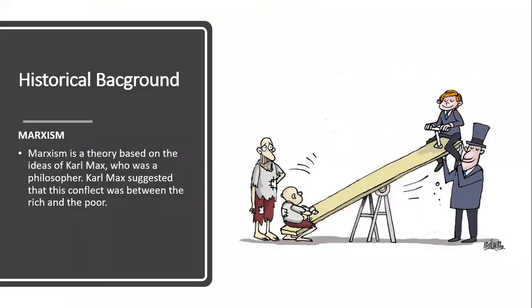We need to talk about two theories when it comes to historical background. One of them is Marxism — a theory based on the ideas of Karl Marx, who was a philosopher born in Germany. He proposed a conflict theory suggesting that society is in conflict with itself, and that the gap between rich people and poor people grows bigger and bigger day by day.